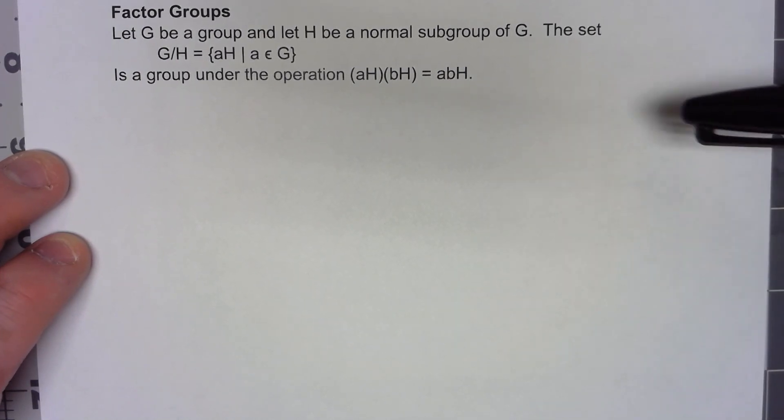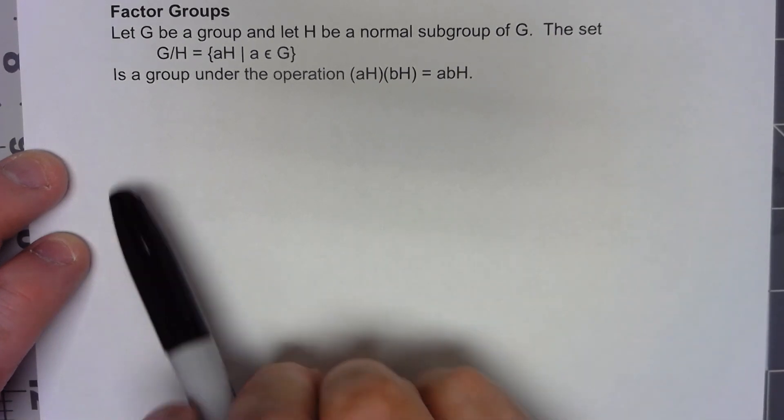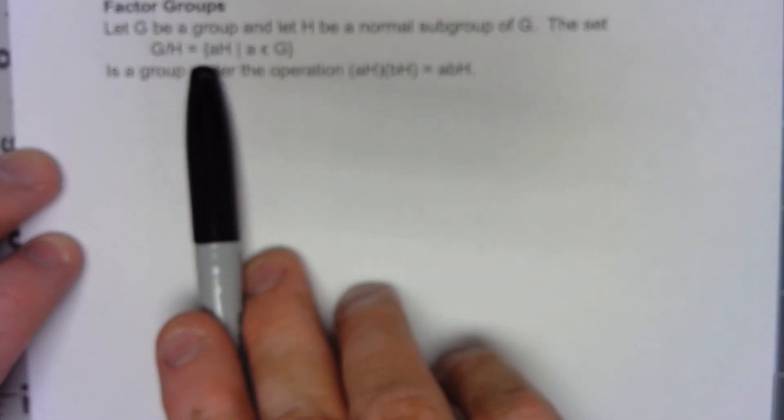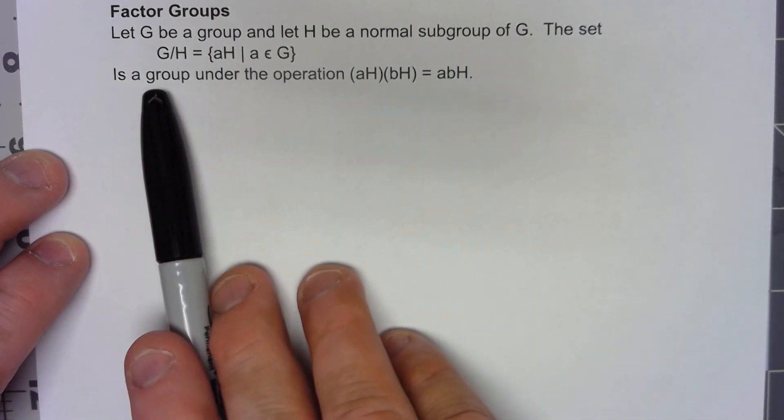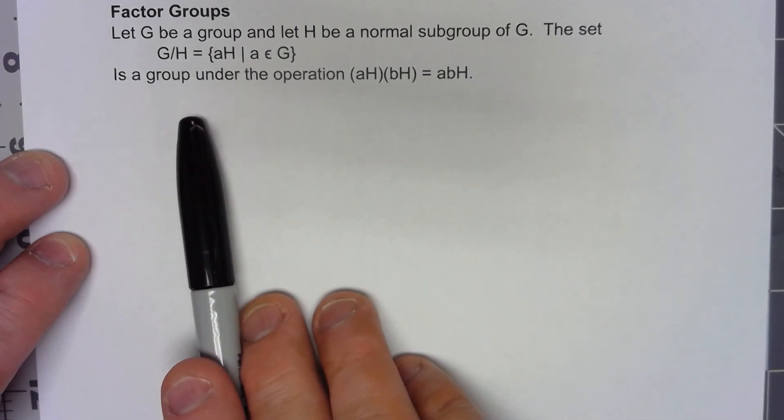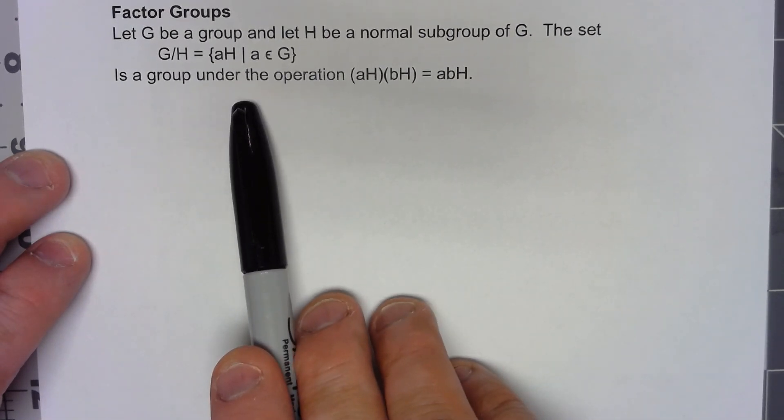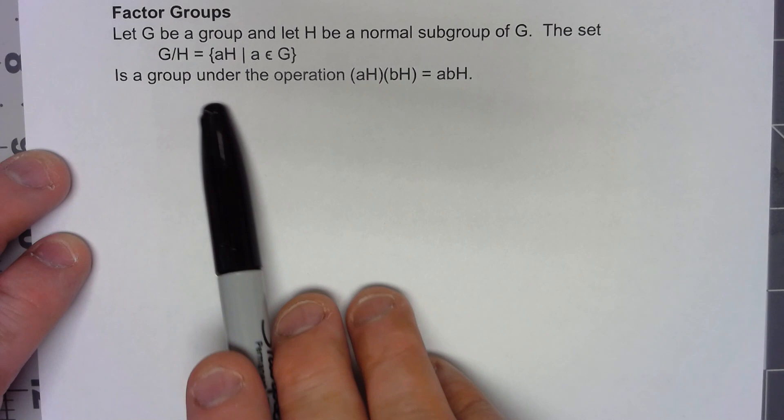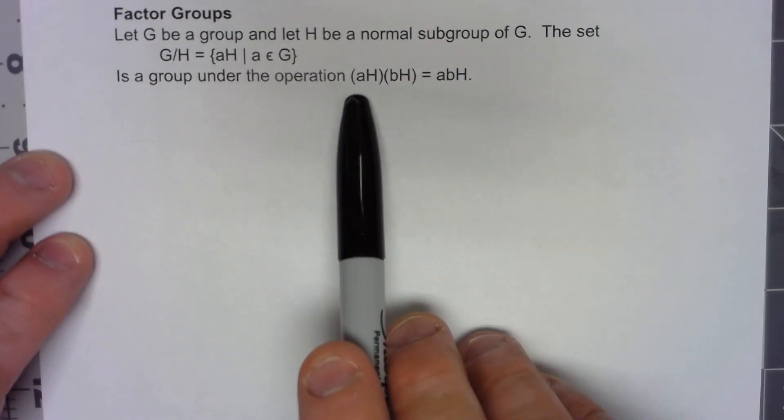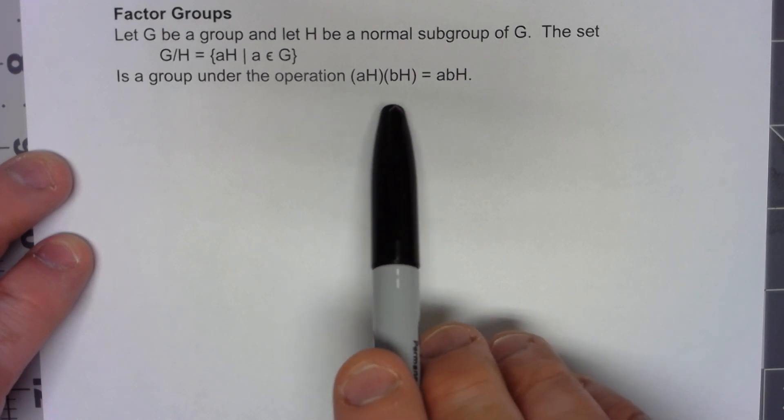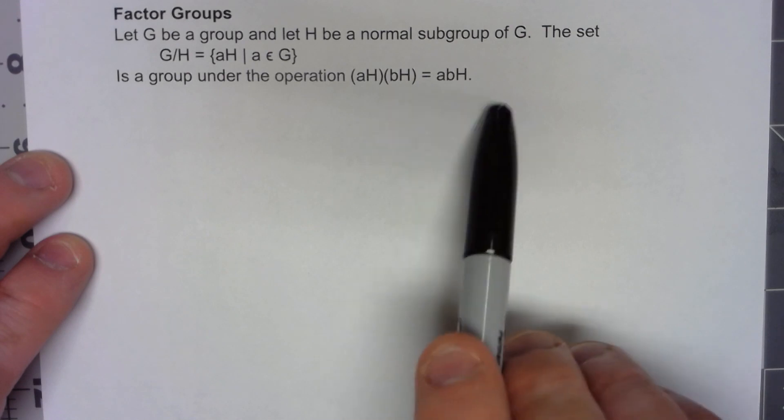It's a group of the cosets of that subgroup. So let's say G is a group and let H be a normal subgroup. Then we're going to say G/H, which is the set of left cosets of that group, is a group under the operation where if you take the coset aH times the coset bH, you get the coset abH.